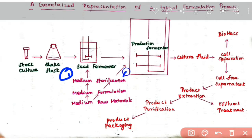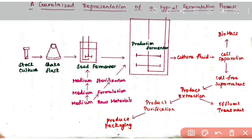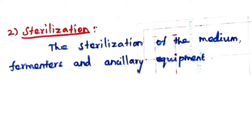One media is for inoculum preparation, which supports the growth of the organism. The other is production media, which supports both the growth of the organism and the formation of the target product. So the key difference is that production media supports formation of the target product, while inoculum media supports only organism growth.